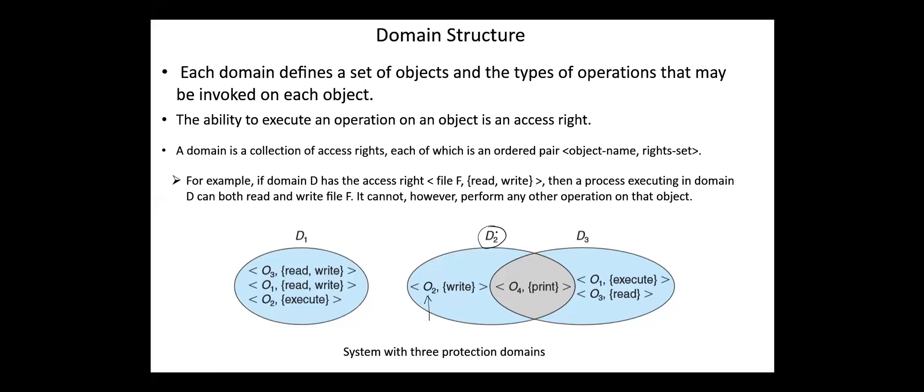The association between a process and a domain may be either static or dynamic. If the association is static, the set of resources available to a process is fixed and cannot change during the lifetime of the process. In dynamic association, the set of resources available to a process may change throughout the process lifetime. Dynamic association is more difficult to implement.